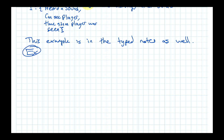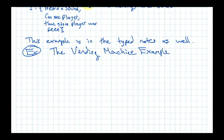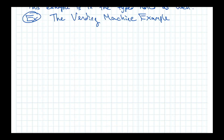The example is the vending machine example. They give us a wall of text which I'm going to walk through and talk about as we go. Here's the specification for the vending machine.